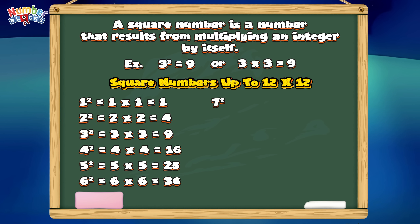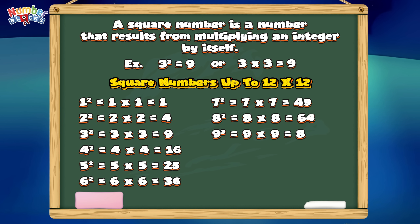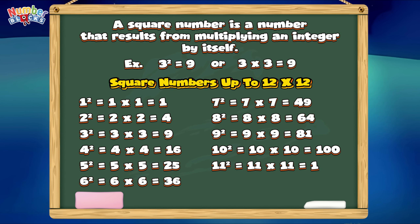Seven square, or seven times seven, is equals to forty-nine. Eight square, or eight times eight, is equals to sixty-four. Nine square, or nine times nine, is equals to eighty-one. Ten square, or ten times ten, is equals to one hundred. Eleven square, or eleven times eleven, is equals to one hundred and twenty-one. Twelve square, or twelve times twelve, is equals to one hundred and forty-four.